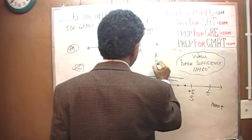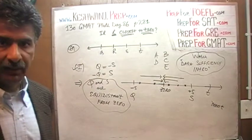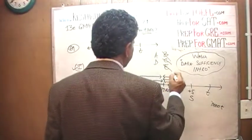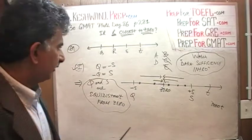The first statement by itself is enough. A, D, B, C, E. Since the first statement by itself is enough, therefore, the answer cannot be B, C, or E. It has to be either A or D. Let's look at the second statement.